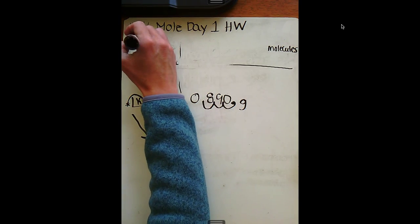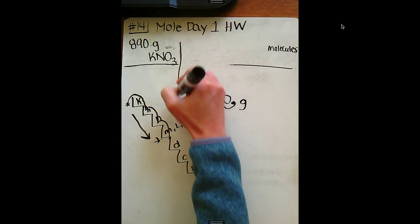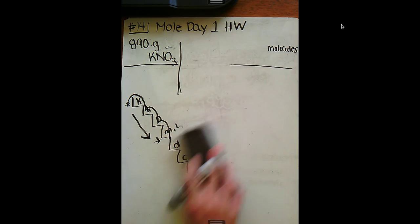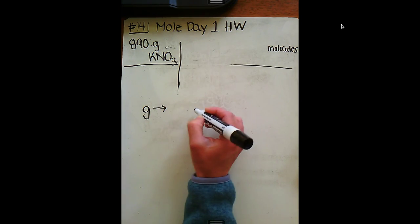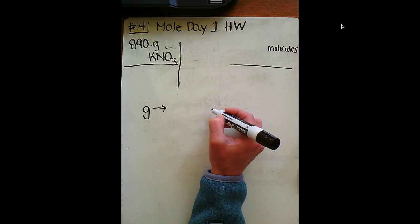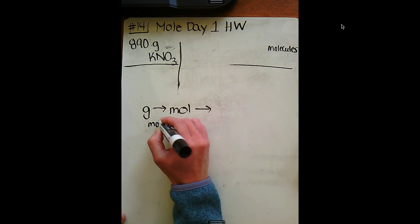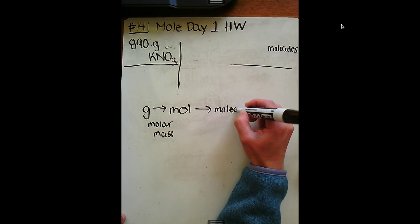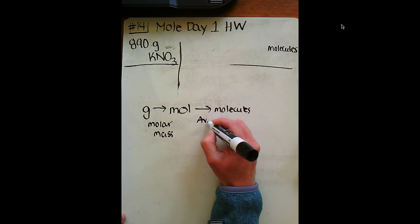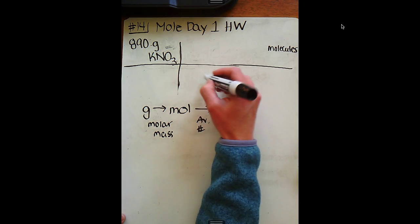So I'm going to change that to 890 grams of potassium nitrate, and now we can move forward. As I said a moment ago, this one is very similar to that last one. We know that we're trying to go from grams to molecules, but we don't have a conversion factor that lets us go from grams to molecules. So what we can do is go from grams to moles using the molar mass, which is what we talked about yesterday, and then we can go from moles to molecules using Avogadro's number.